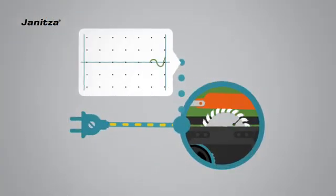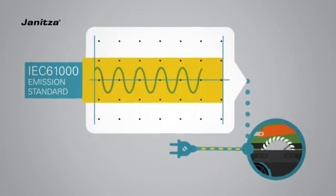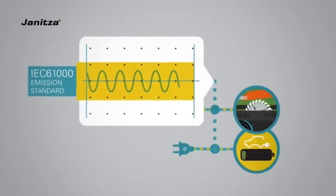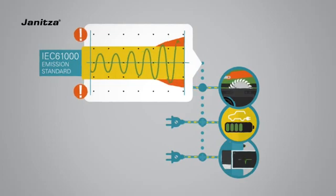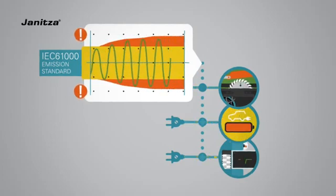A minor current distortion is not problematic in itself and often remains within the standard. But the sum of these causes considerable power supply pollution that negatively affects power quality.